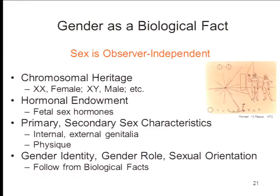That chromosomal heritage has consequences for your hormonal endowment — if you're genetically XX you get one bath of hormones as a fetus, if you're genetically XY you get another. This leads you to develop what biologists call the primary and secondary sex characteristics: the nature of your internal and external genitalia and a characteristically masculine or feminine physique. And your identity as a man or a woman, your role as more or less masculine or feminine in behavior, and your sexual orientation basically all follow from these objective biological facts. That is the story about gender as an observer-independent biological fact.